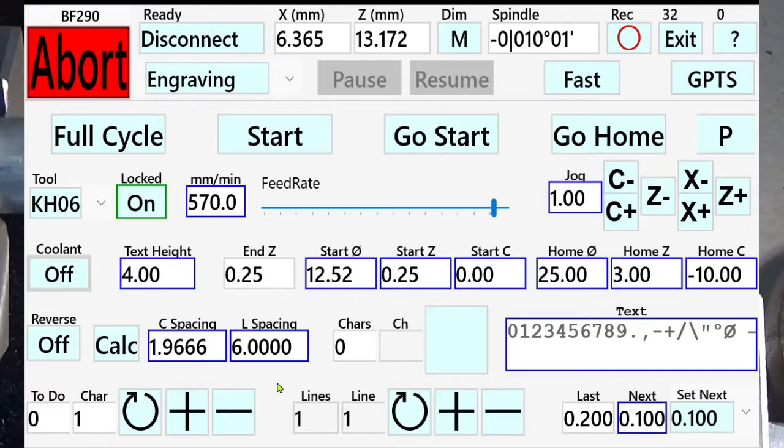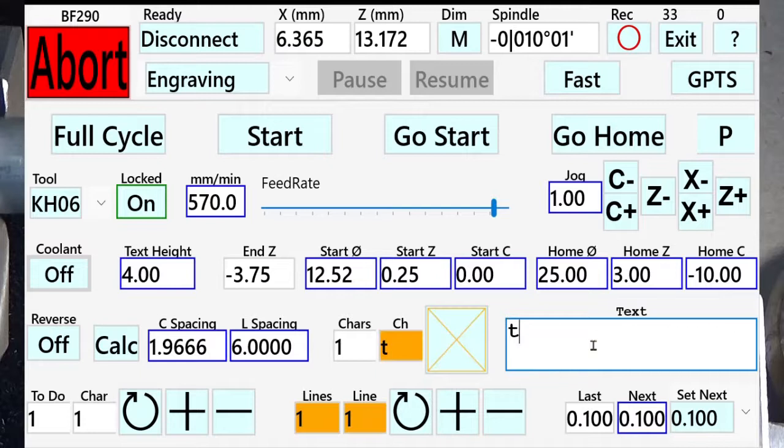We start by entering text in the text field. When I enter an unsupported character like the T, the character is written or drawn as an orange cross and the character itself gets an orange background. You also see the background of the lines and the line will be orange indicating that there is a problem.